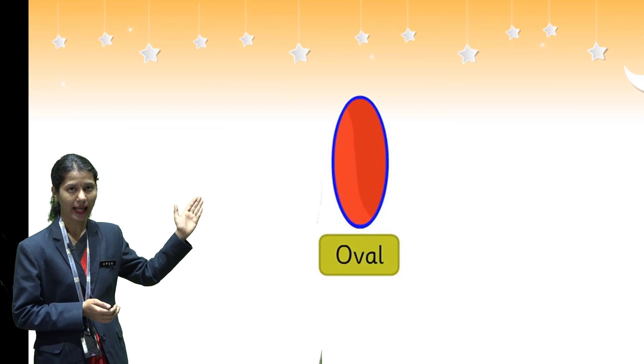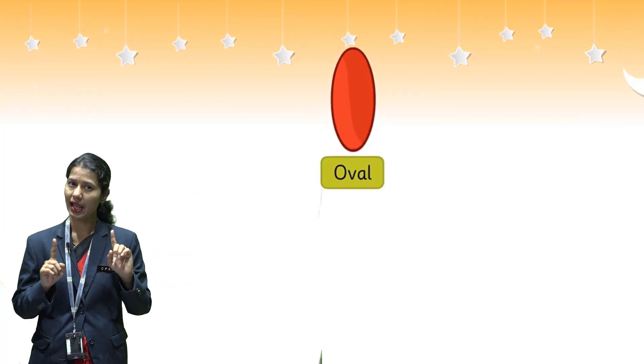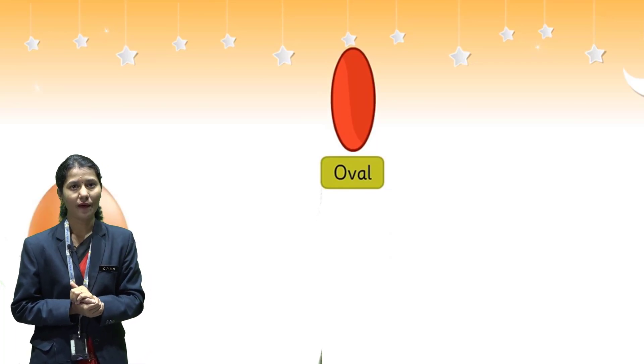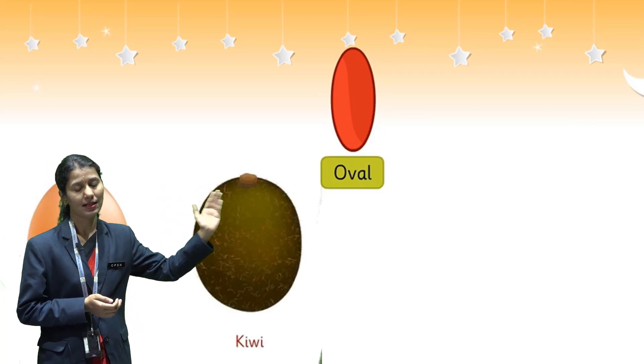This is last one, an oval. An oval has also no corners and no sides and it looks like an egg. Examples of an oval are an egg, kiwi and turtle shells.